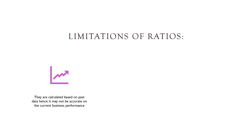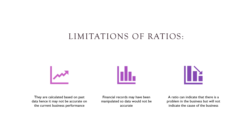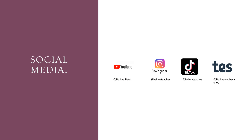Now, what are the limitations of these ratios? One: they are calculated based on past data, hence they may not be accurate on the current performance of the business. Two: financial records may have been manipulated, so the data might not be accurate. Three: ratios indicate that there's a problem in the business, but they will not actually indicate what the cause of the problem is. Hopefully, this video helped you understand ratios and how to measure profitability, liquidity, and efficiency. If you like this video, give it a like and subscribe. Follow my Instagram for regular updates, and my TikTok for short business revision clips.